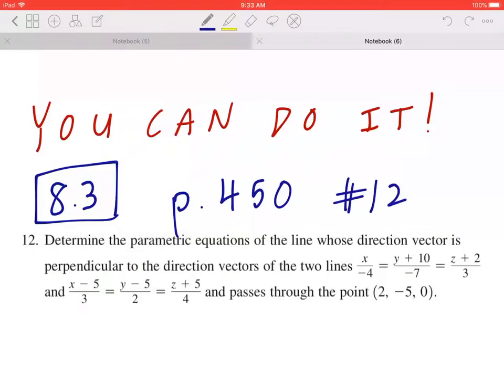And x minus 5 divided by 3, equal to y minus 5 divided by 2, equal to z plus 5 divided by 4, and passes through the point (2, -5, 0).